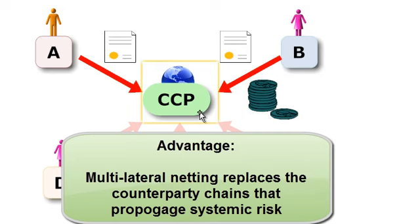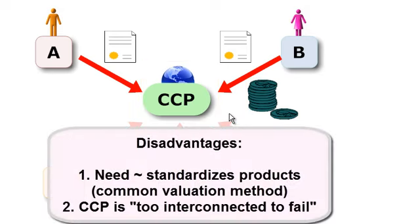Now the two disadvantages, or there may be more than two, but I'll give you the two primary disadvantages of the central counterparty. One, in order for all of these members to trade with the central counterparty, these derivative instruments need to be somewhat standardized. So this is the idea that the instruments need to be standardized and therefore not all over the counter derivatives can trade to the CCP.